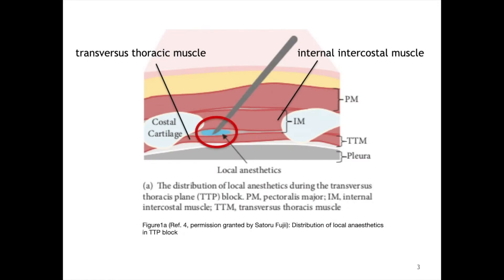Analgesia is provided via a single injection of local anesthesia between the internal intercostal muscle and the transversus thoracic muscle, located in the third and fourth, or fourth and fifth intercostal space, lateral to the sternum.